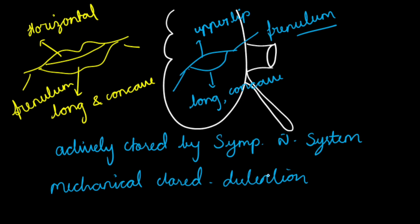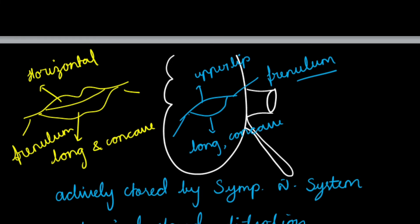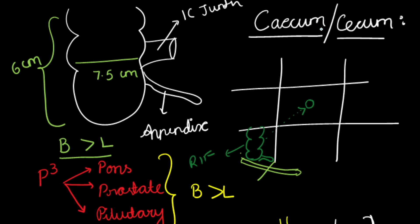Quick recap: The cecum, with its mysterious spelling, is the commencement of the large intestine, located in the right iliac fossa above the lateral half of the inguinal ligament. Appendicitis pain in the right iliac fossa is referred to the umbilicus due to the same dermatomal origin. The length is 6 cm and breadth is 7.5 cm — breadth is more than length, similar to P3: pons, prostate, and pituitary. This is an important MCQ point.